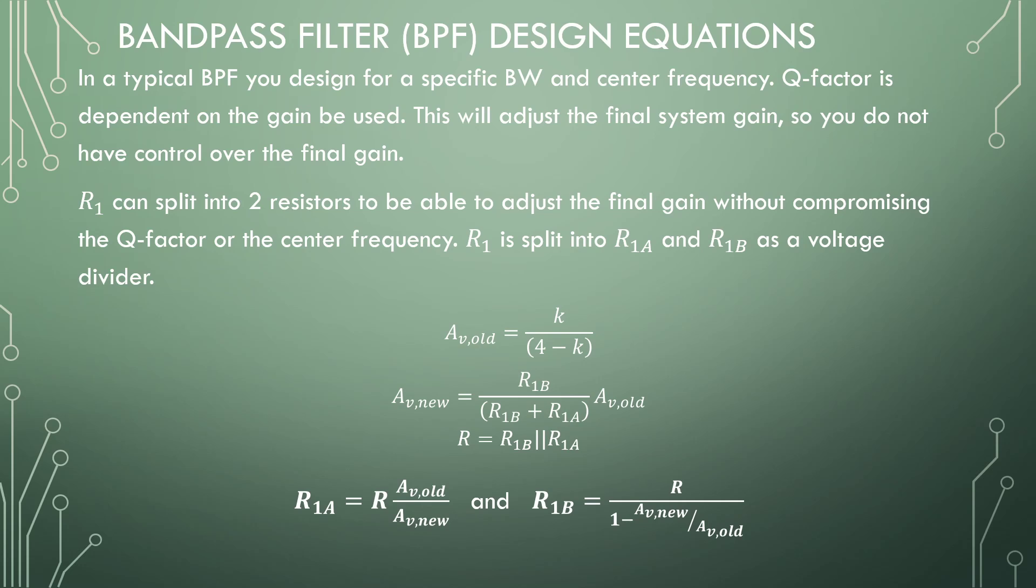As we saw in the previous problem, we didn't have any control over the gain. So we can calculate the gain of that filter, and then we can convert resistor 1 into a voltage divider to basically correct the gain on the input side of the amplifier.